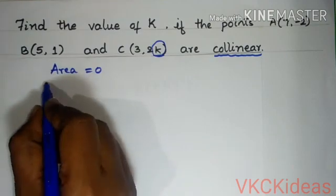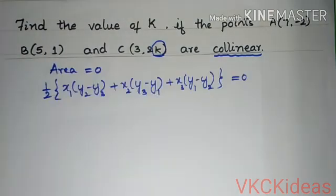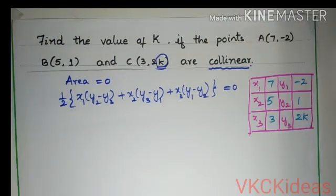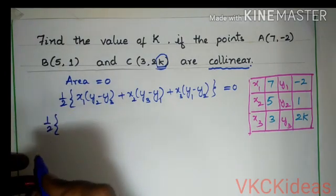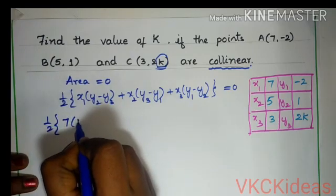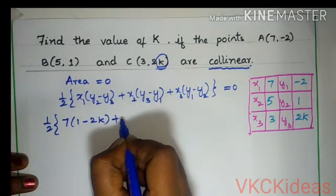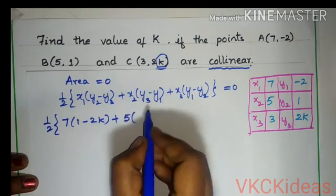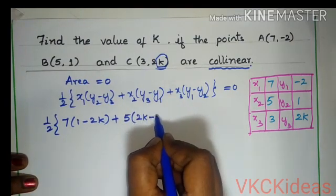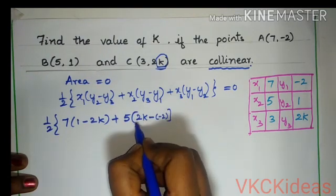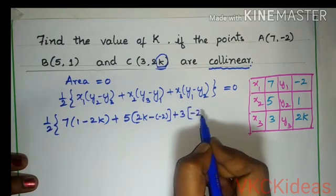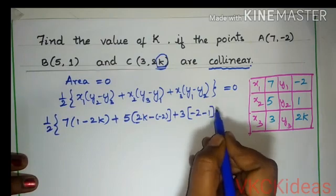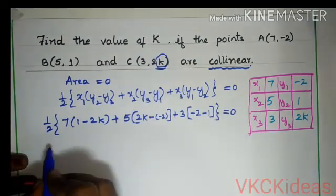We will write the area formula and substitute the values: half into x1 is 7, y2 is 1, y3 is 2k, plus x2 is 5, y3 is 2k, y1 is −2, plus x3 is 3, y1 is −2, y2 is 1. This should be equal to 0.